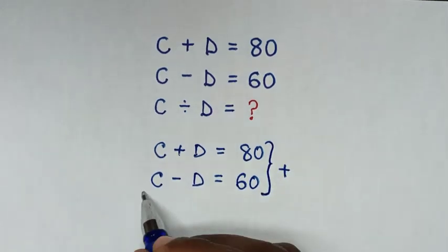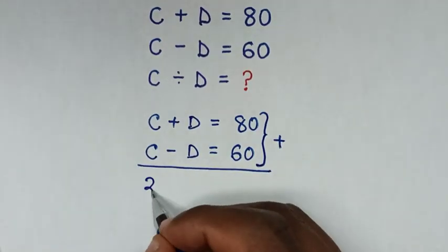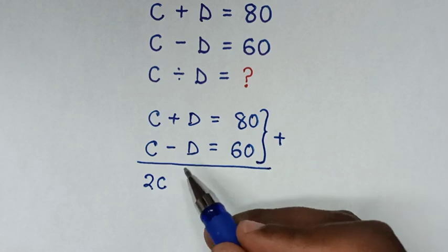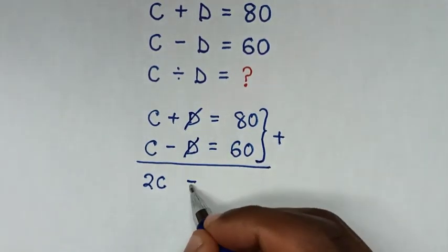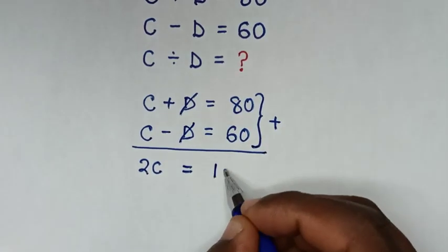Then it will be equal to, from C plus C is 2C, D minus D is 0, so this and this will cancel. Then it will be equal to 80 plus 60 is 140.